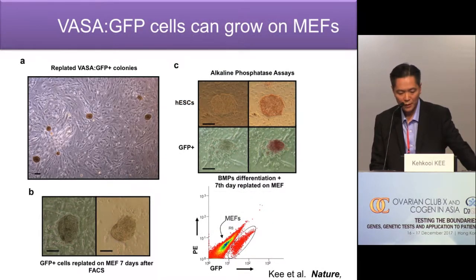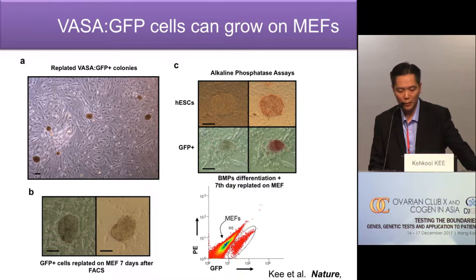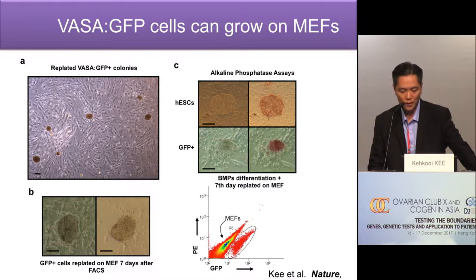Some of the data shows that if we put the GFP-positive cells back onto MEF feeders, they grow as tight colonies — smaller and more condensed than human embryonic stem cell colonies — and alkaline phosphatase activity is actually higher than human embryonic stem cells. After 7 days of replating on MEF feeders, the cells are still expressing EGFP, confirming we can isolate these cells by EGFP expression.